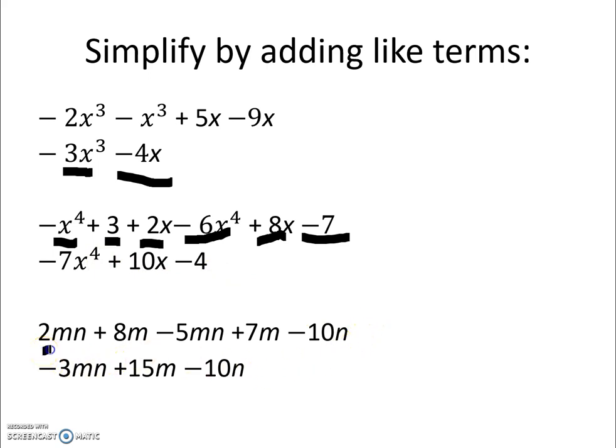We have 2mn minus 5mn, which is a negative 3mn. We have plus 8m plus 7m for a total of plus 15m. And we still had that negative 10n.